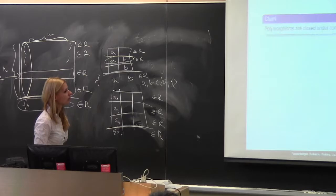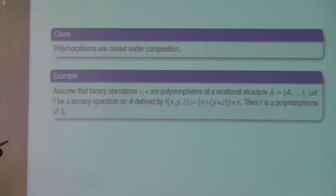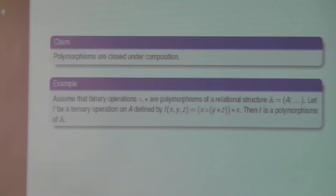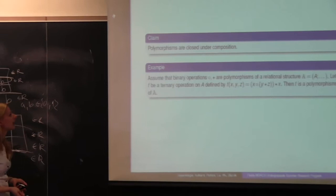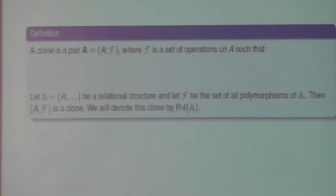Polymorphisms are closed under composition. For example, if we have two binary operations that are polymorphisms of a relational structure, we can compose them into a ternary operation, and it is easy to check that this ternary operation will also be a polymorphism. We proved that polymorphisms contain all projections and are closed under composition. The definition of a clone is exactly these two properties.